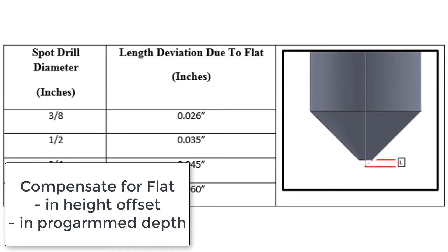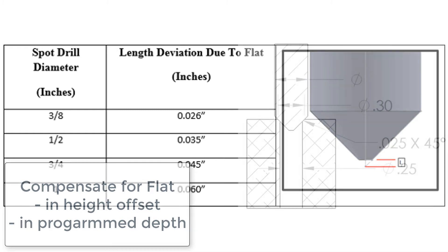One is to program the depth as if the tool did come to a point and then adjust the tool's height offset by the length deviation. The other is to adjust the program depth. Either method is fine as long as the method used is clearly communicated within your shop.